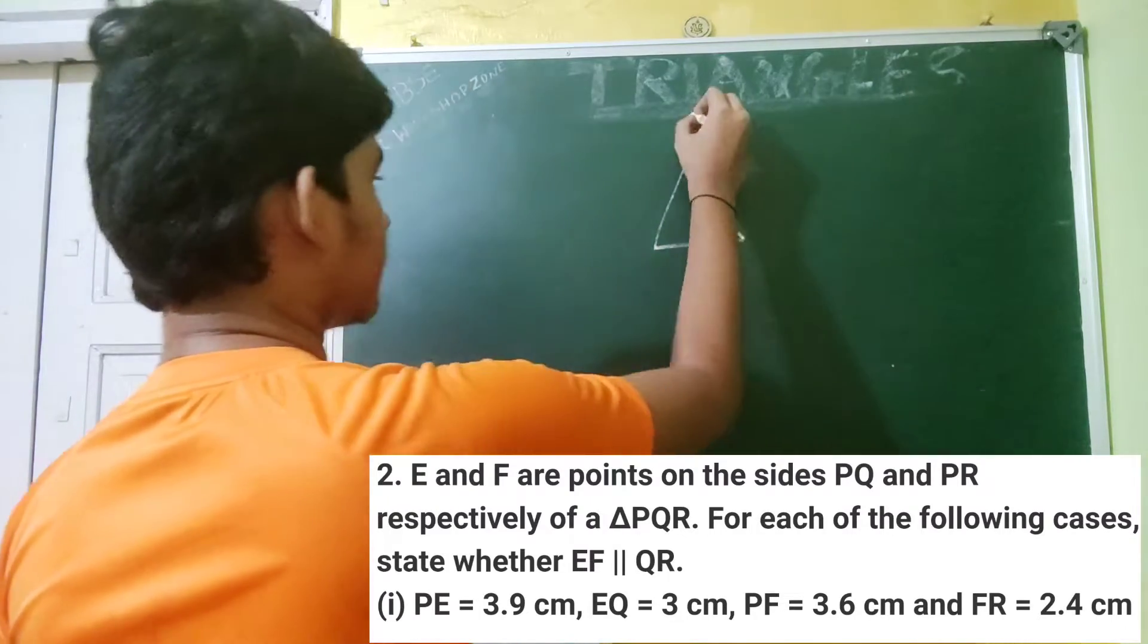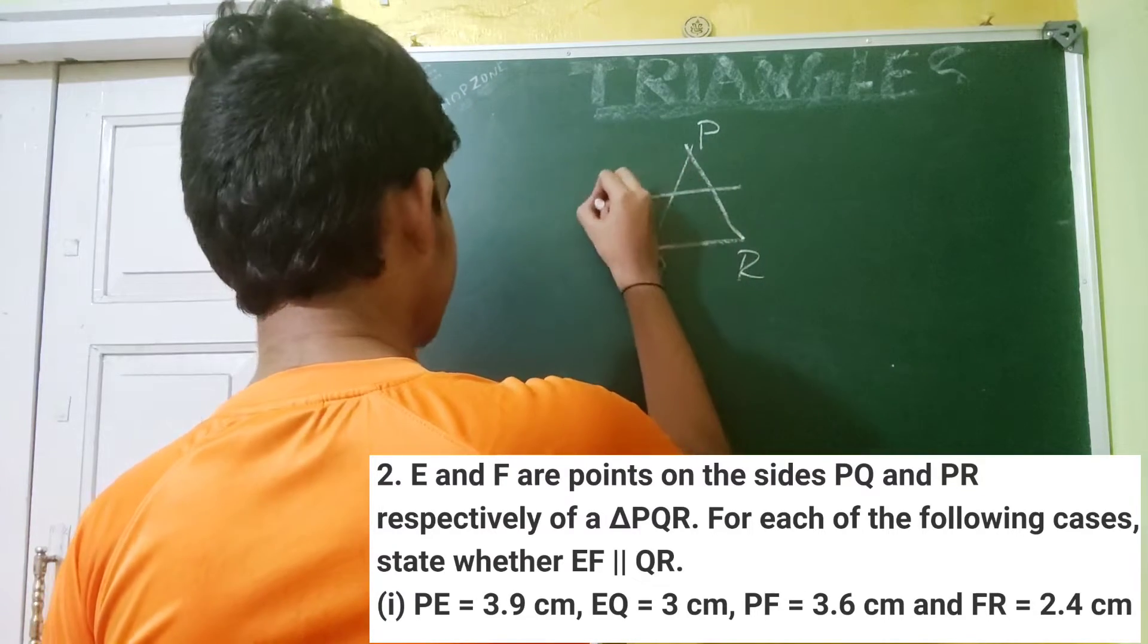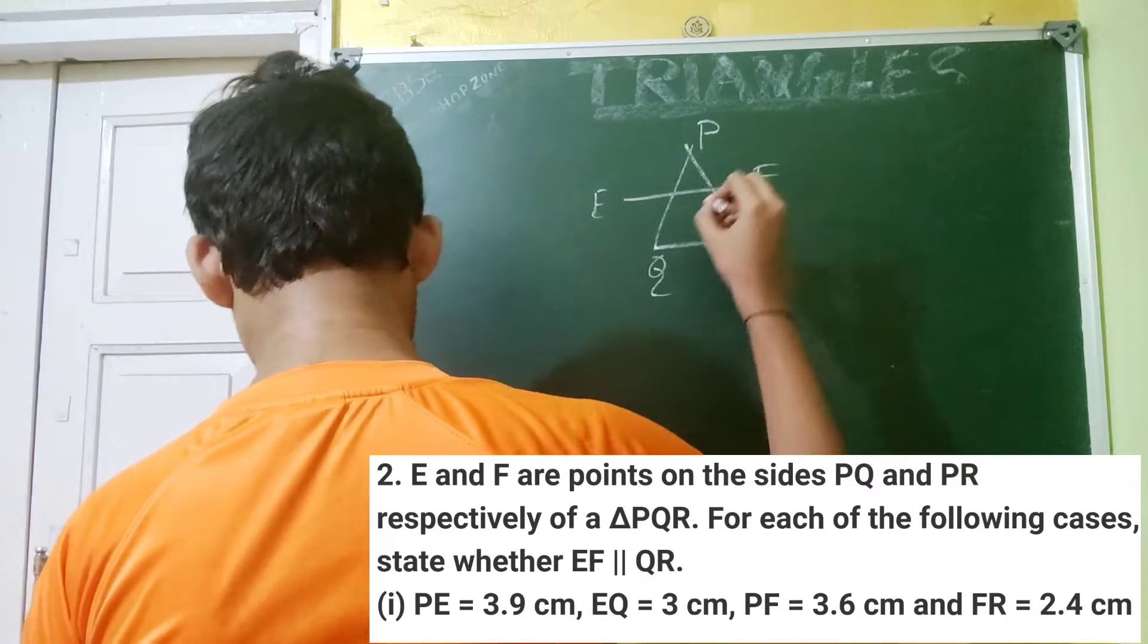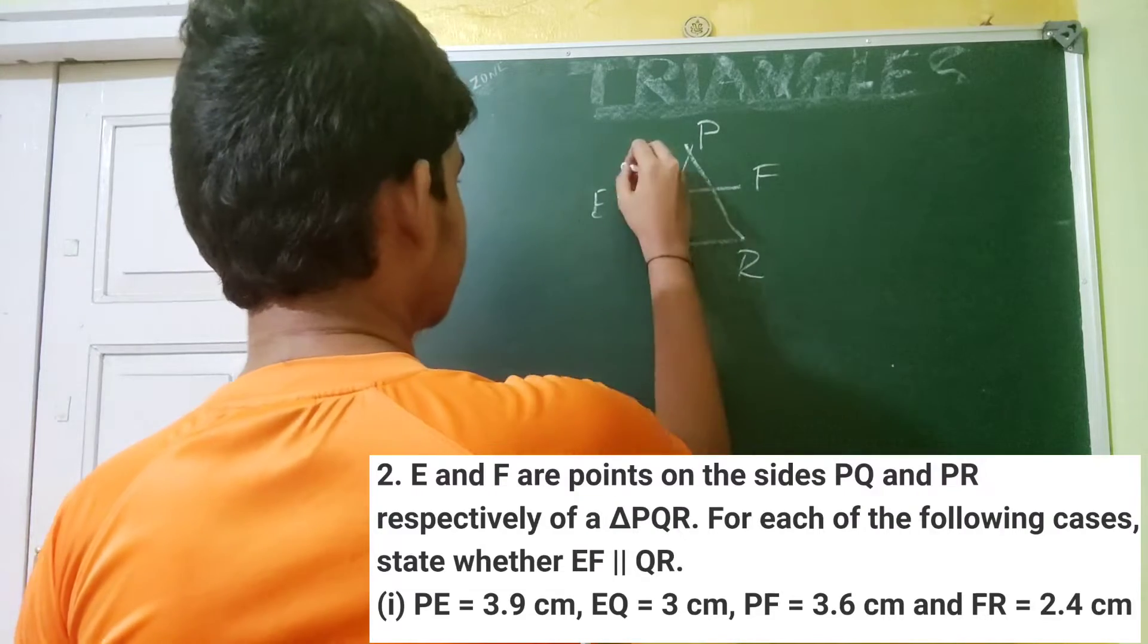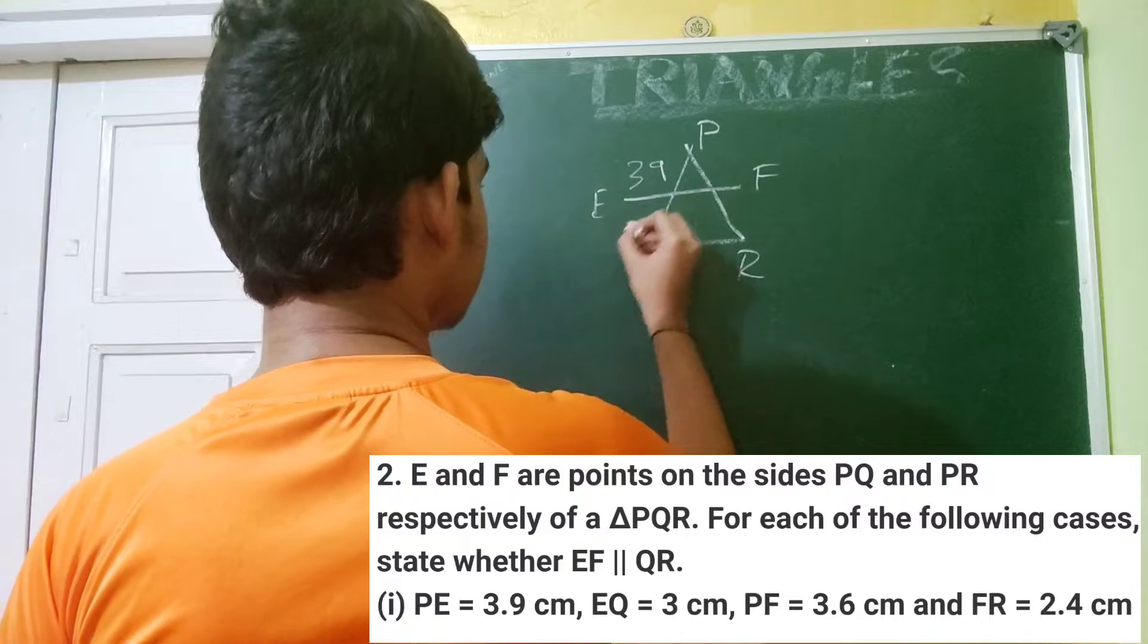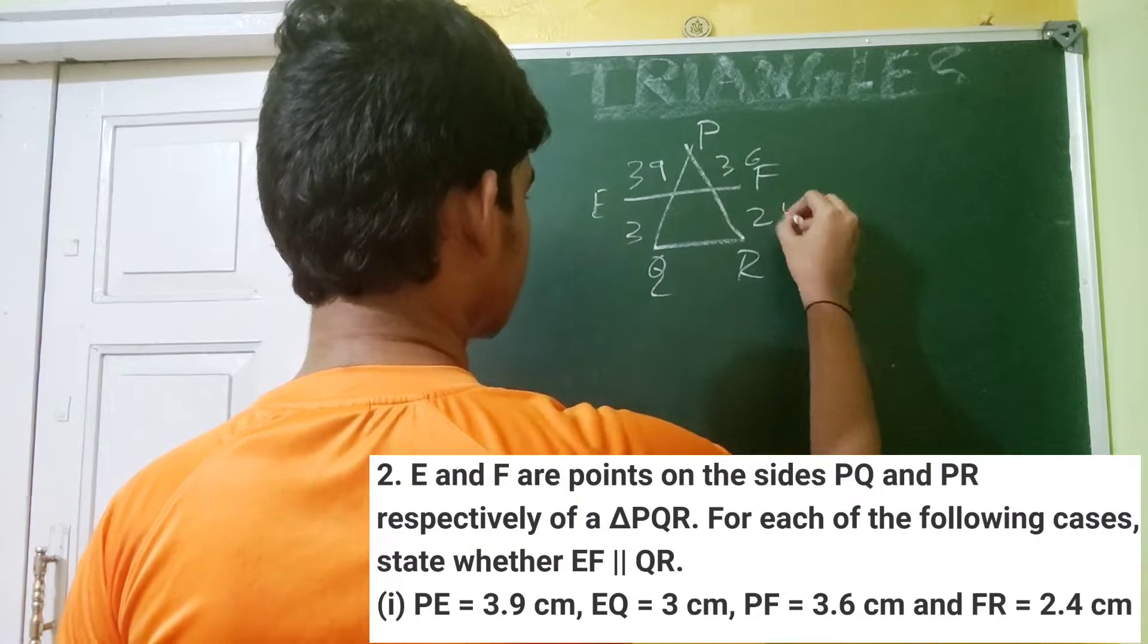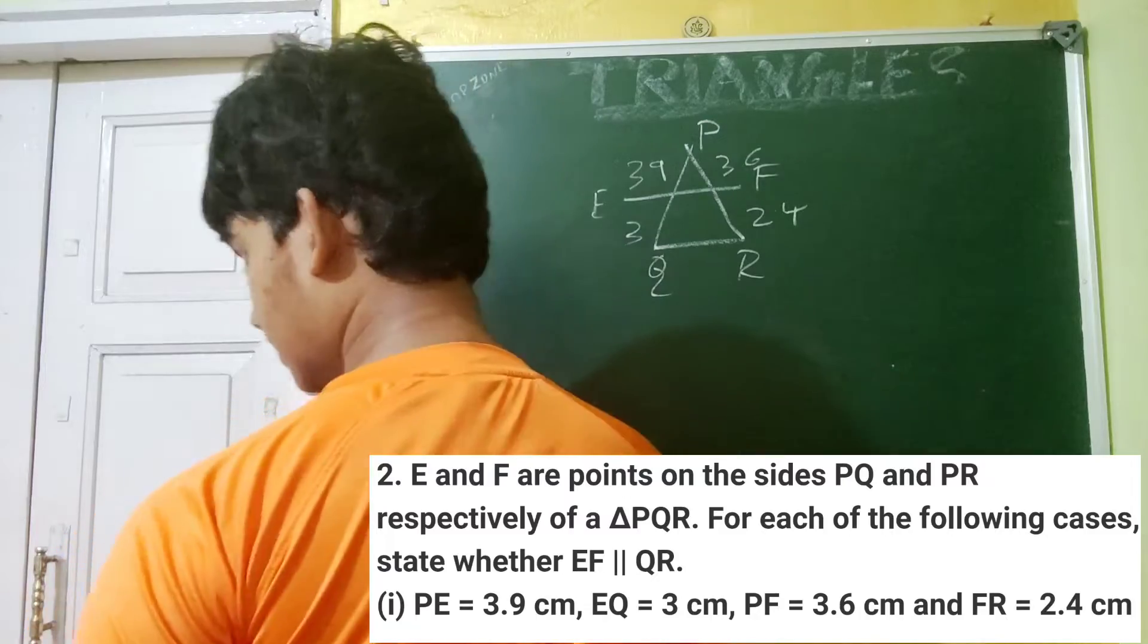So let me just take an odd triangle PQR and we draw a line. Let's take this as E and F. So PE is 3.9 and EQ is 3. This one is 3.6 and this one is 3.4. Okay, so now let's solve.